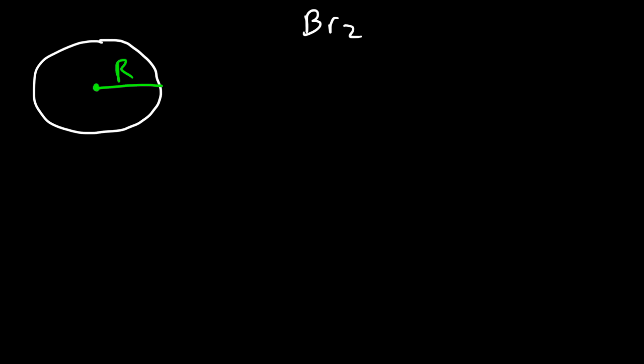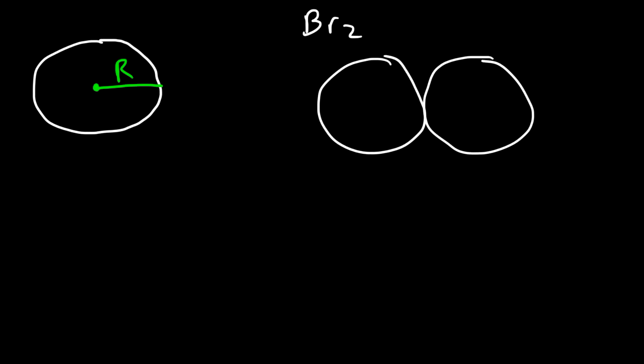Let's talk about atomic radius. The atomic radius of an atom is like drawing an atom as a circle — the radius is the distance between the center and any edge. I'm going to use bromine as an example. Bromine consists of two bromine atoms, and the distance between the nuclei of the bromine atoms in this molecule is 228 picometers.